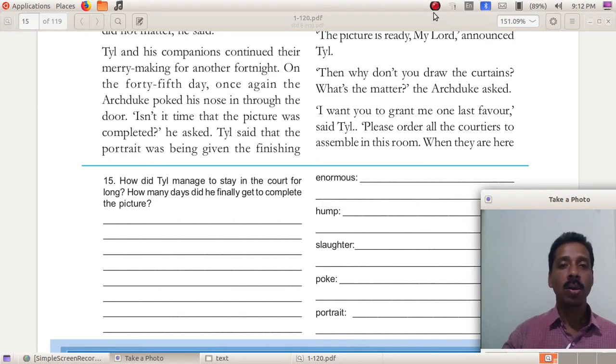All the courtiers wanted to make changes in their appearance while Till drew the picture. They asked Till to rectify those problems and draw very beautiful pictures, otherwise they threatened to kill him. At the same time, the Archduke asked Till to draw the picture without making any changes. Everyone should exactly look like as they are. There should not be even the slightest change.